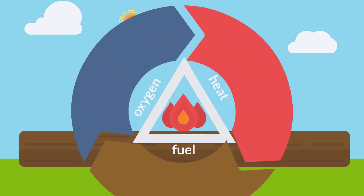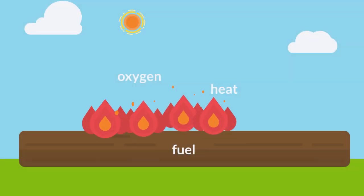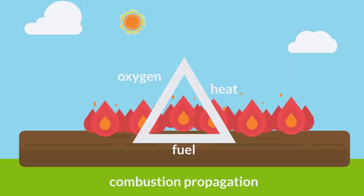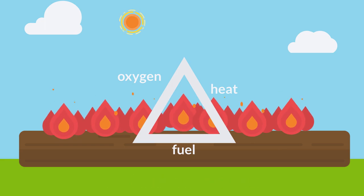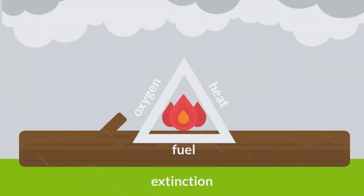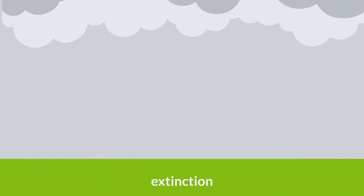Once started, combustion produces its own heat. And it will continue as long as there is enough oxygen and fuel present. This is known as combustion propagation. Then, extinction occurs when the fire triangle is broken because of the lack of heat, oxygen, or fuel.